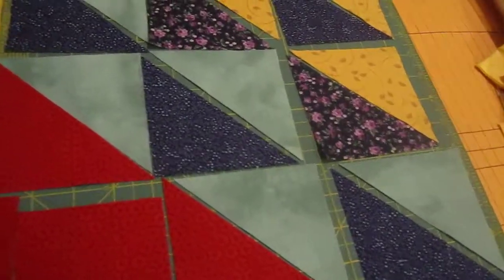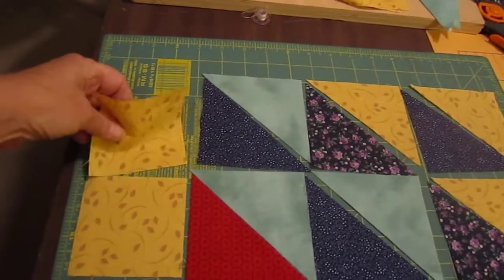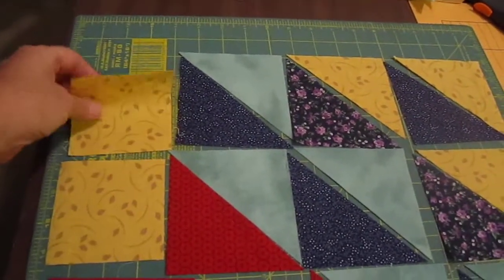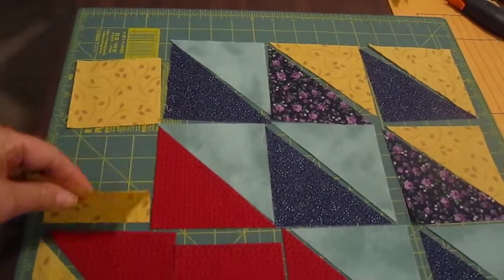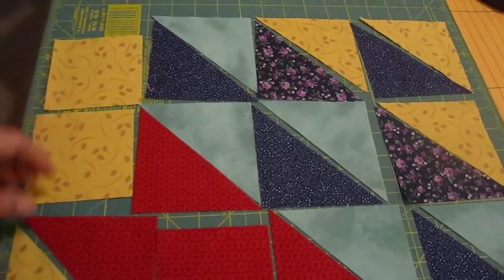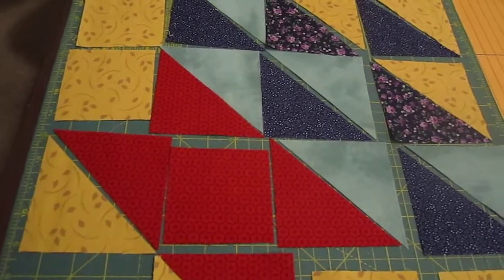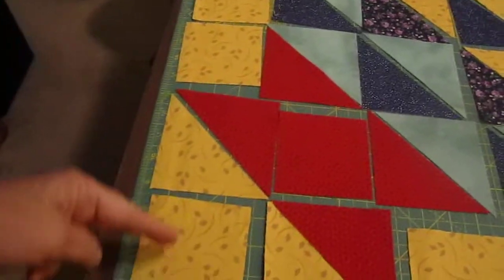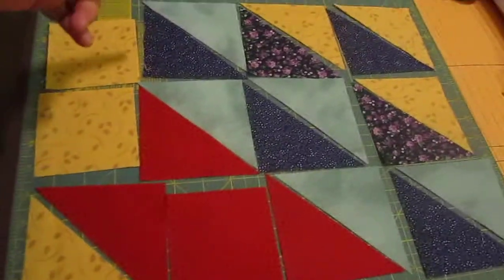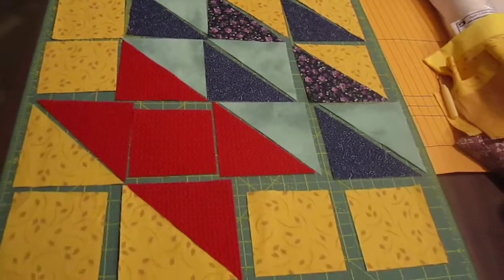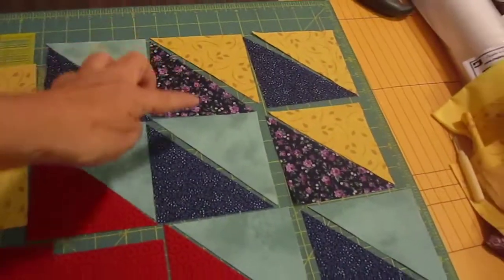You're going to sew your rows—this piece to this piece, then this piece to this square, and this square to this square. You'll have one full row here. Then you'll do the same thing with the next row, and then the next row.